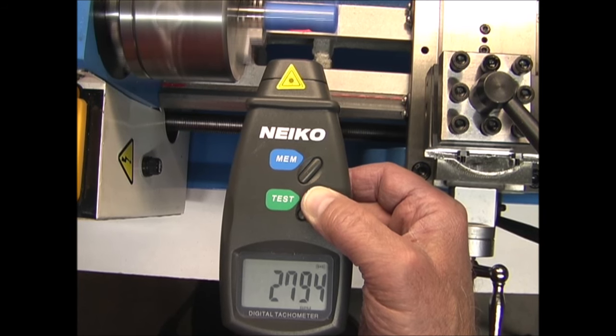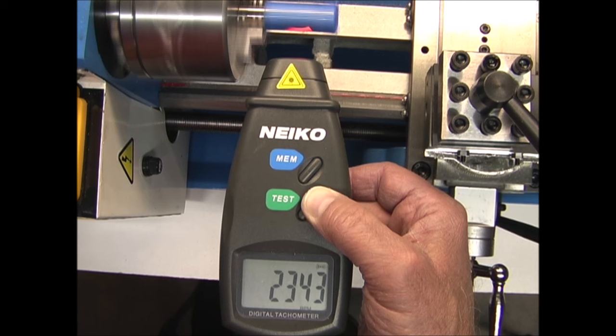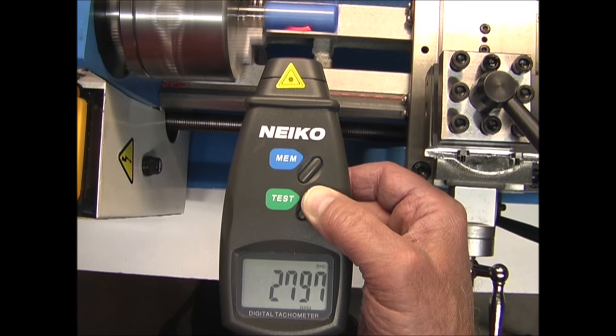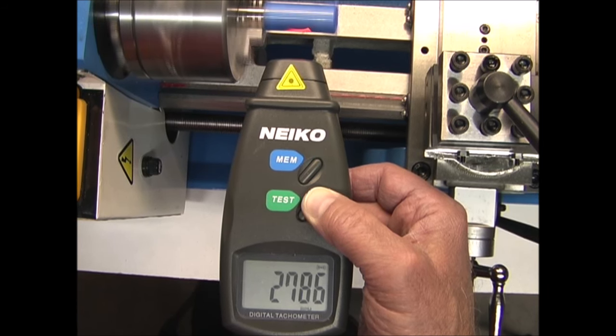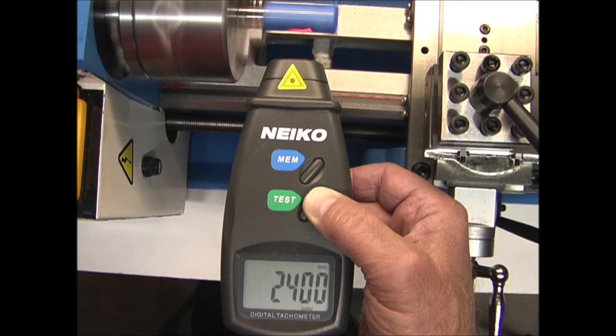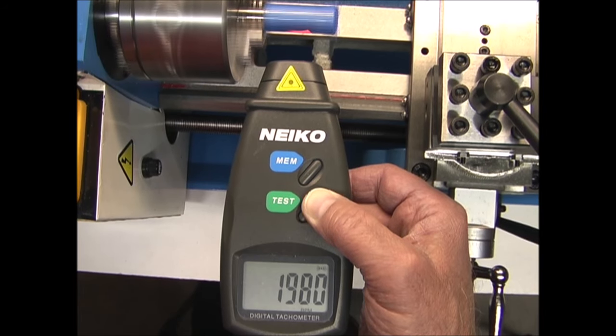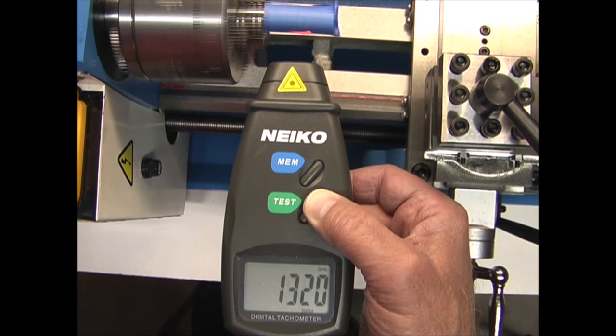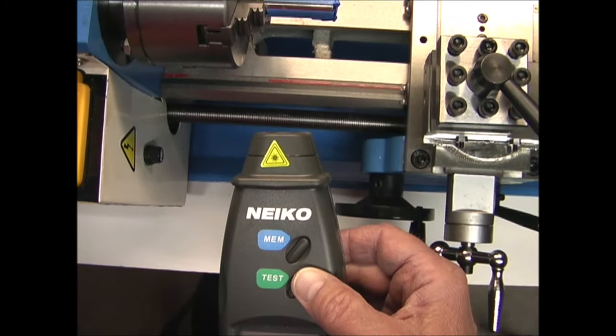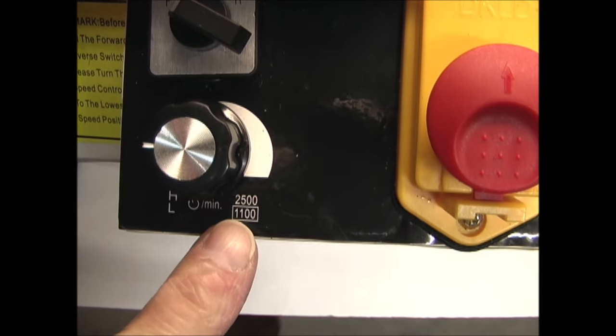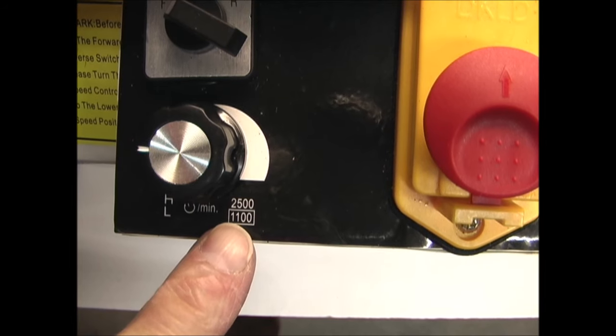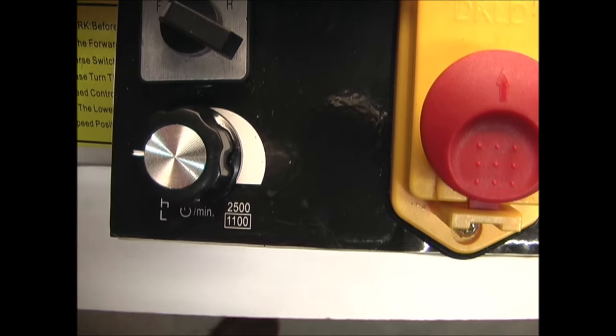The tachometer is showing almost 2800 RPM. The dial shows a maximum of 2500, so that's quite a bit more than it shows on here.